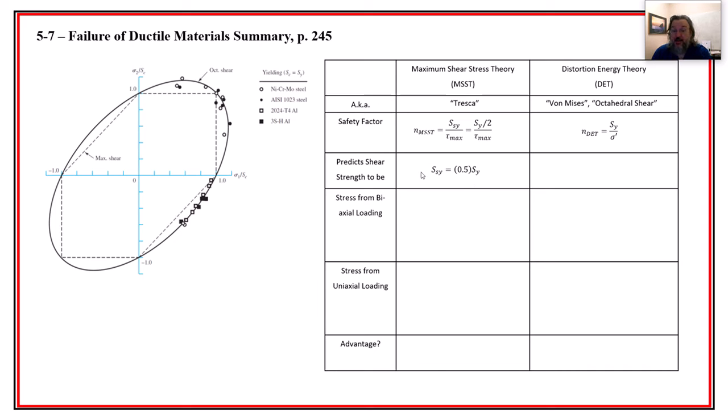In the maximum shear stress theory, as we've mentioned, we predict that the shear strength is half of the normal strength, normal yield strength. In von Mises, a.k.a. distortion energy theory, it actually turns out to be 0.577. That's because it's 1 divided by the square root of 3. We'll see where that comes from in a second. We'll see the equation where that comes from to remind us. But it's a little compare and contrast.